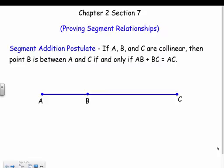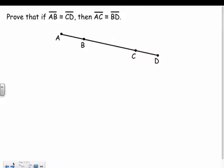So AB plus BC gives me AC, the whole thing. If they're on the same line, I can add each piece segment together to get the whole segment. And that's going to come in handy in our proof. So let's take a look at our proof.